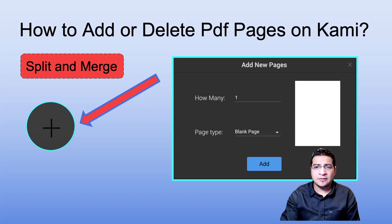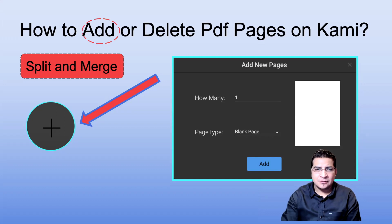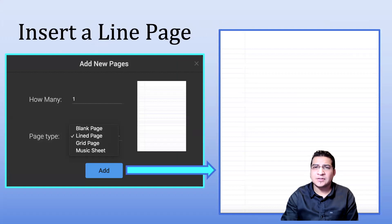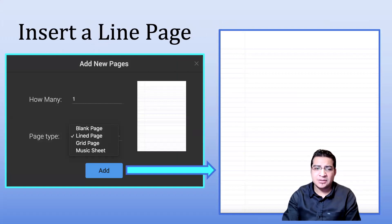So for add or delete pages, you'll see the option for split and merge. We're going to start by adding pages first. Notice right here we have insert a line page. You have four options: a blank page, line page, grid page, and music sheet.